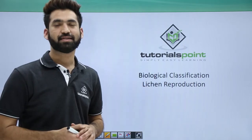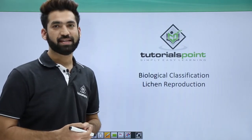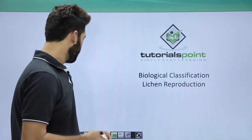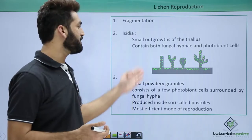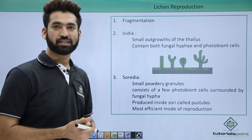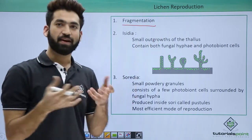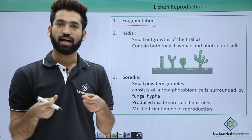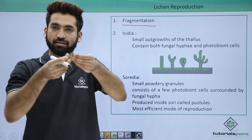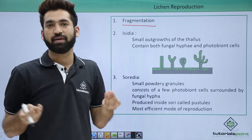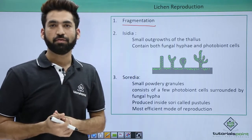In this session we'll be discussing how reproduction takes place in lichen. There are basic reproduction methods; the very important one is fragmentation. In fragmentation, the fungal partner and the algae partner break into fragments, and each of these fragments will give rise to a new lichen.